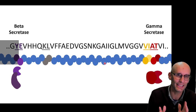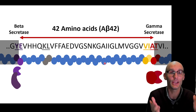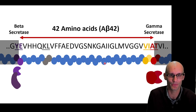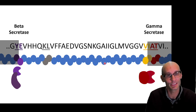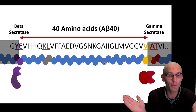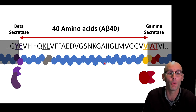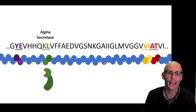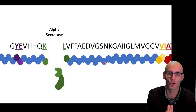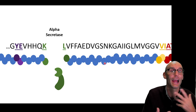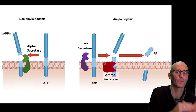Then we have gamma secretase, which can actually cleave in a few sites. It can create the 42 amino acid amyloid fragment — that's the A-beta 42 — the most famous amyloid fragment associated with Alzheimer's disease. Gamma secretase can also cleave just two amino acids to the left, creating the A-beta 40 fragment. Now alpha secretase cleaves right in the middle here, so you're not going to get the pathogenic A-beta 42 fragment — that's why alpha secretase is a potentially very helpful enzyme in avoiding amyloid buildup.